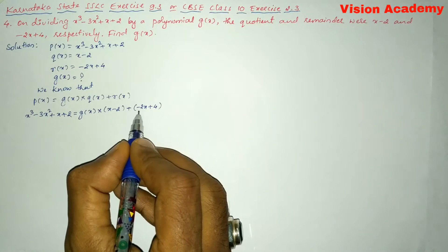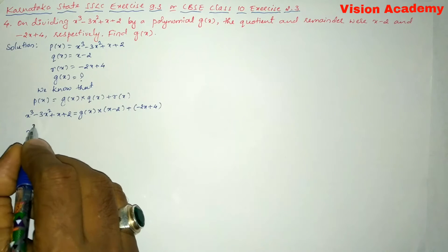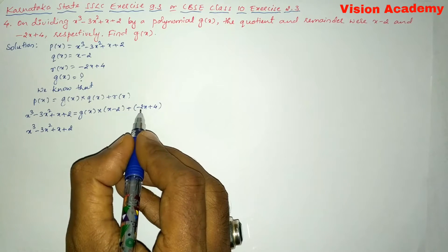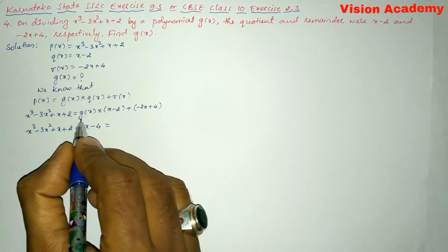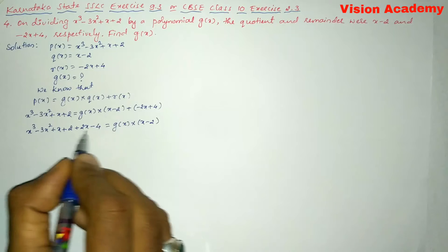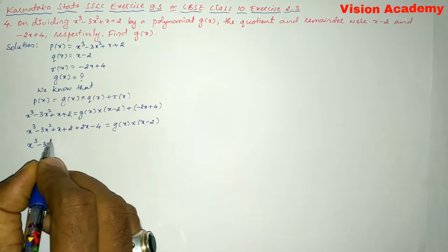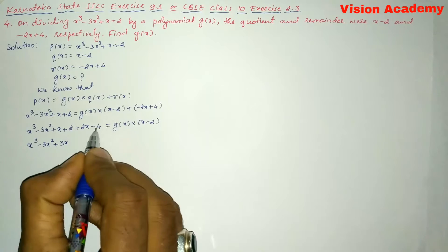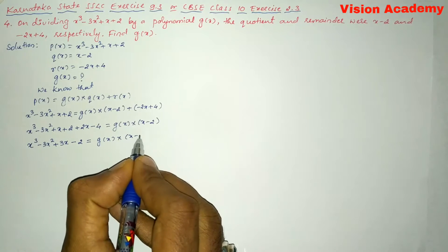Now let us transpose minus 2x plus 4 from the RHS to the LHS. It becomes x³ minus 3x² plus x plus 2 plus 2x minus 4, equal to g(x) into x minus 2. Simplifying: x³ minus 3x² plus 3x minus 2 is equal to g(x) into x minus 2.